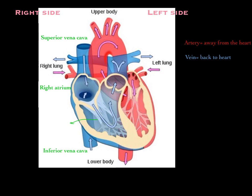From the right atrium, the blood flows through a valve into the right ventricle. One way to remember this is that atrium — the letter A — comes before V for ventricle. So the top chamber is always the atrium and the bottom chamber is always the ventricle, on both the right and the left side of the heart.